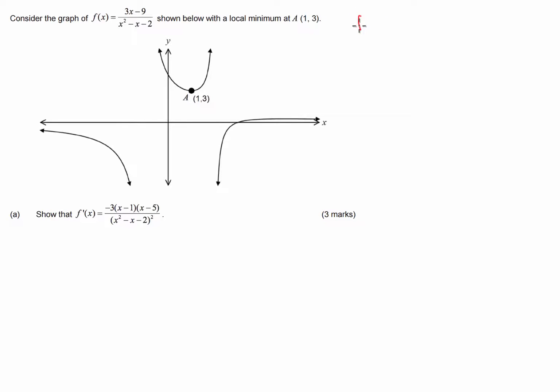The quotient rule is for when we have a function that is defined as the quotient of two other functions, so we have u divided by v. The quotient rule states that if we've got a rational function, its derivative is going to be equal to the derivative of u times v, subtract the derivative of v times u, all divided by v squared.